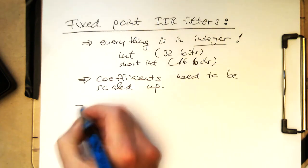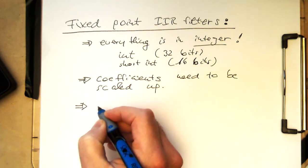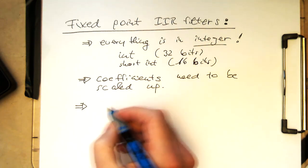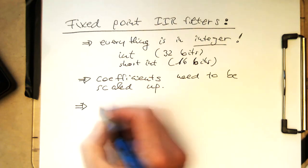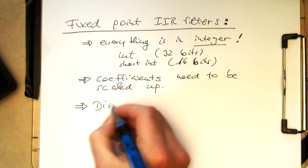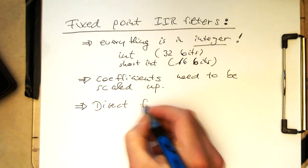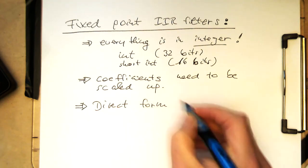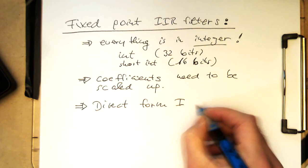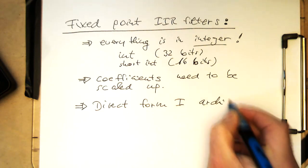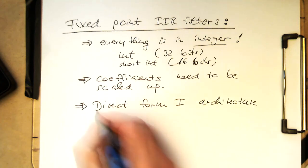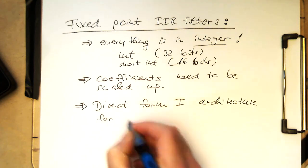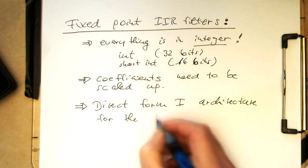In terms of architecture, we use the so-called direct form I architecture for this filter. Direct form one architecture for the IIR filter.